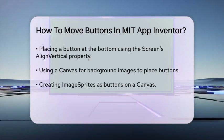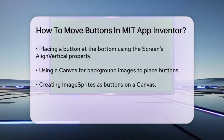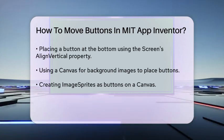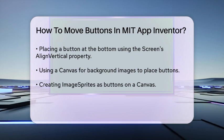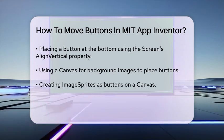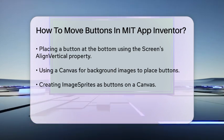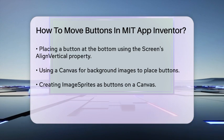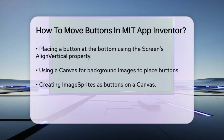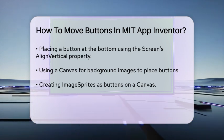If you want to place a button at the bottom of the screen, you can set the screen's Align Vertical property to Bottom. This is a simple way to ensure your button stays at the bottom regardless of the screen size.